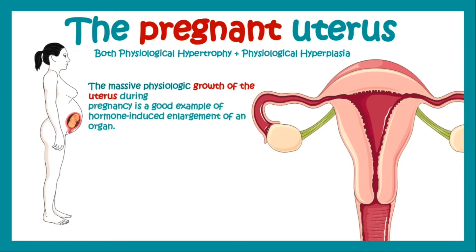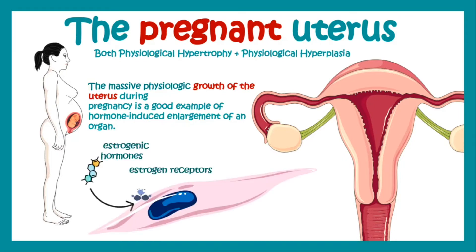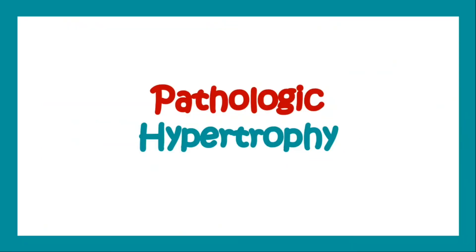The smooth muscles of the uterus have estrogen receptors. When estrogenic hormones act on those estrogen receptors, they bring about hypertrophy — an increase in size of the cell — which causes the increase in size of the uterus. Now let's talk about pathological hypertrophy.